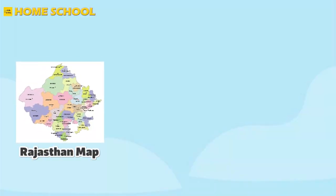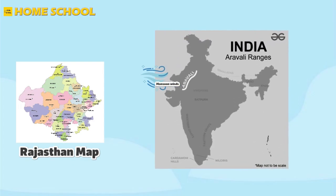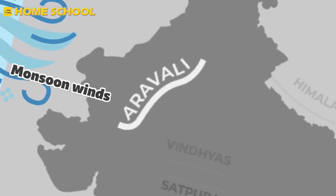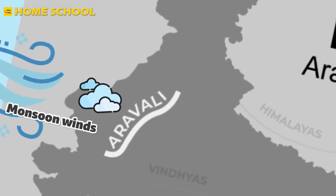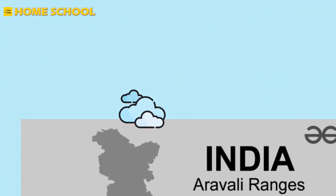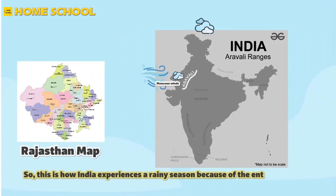A similar thing happens in Rajasthan as well. The monsoon winds cannot enter this area as it is blocked by the Aravali ranges. The Aravali mountain ranges stop the monsoon rain, and the clouds that manage to get over the mountains are already empty and therefore fail to cause rain. With time these clouds move towards the north. This is how India experiences a rainy season because of the entry of the southwest winds.